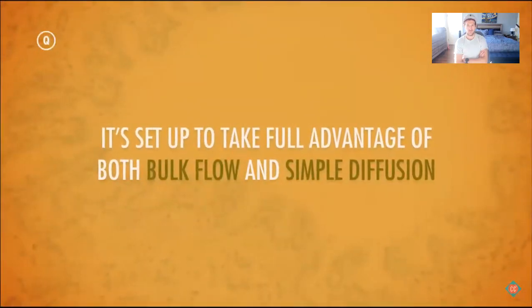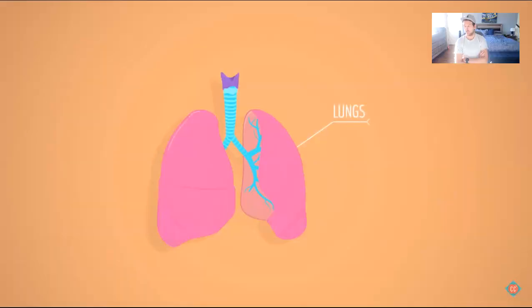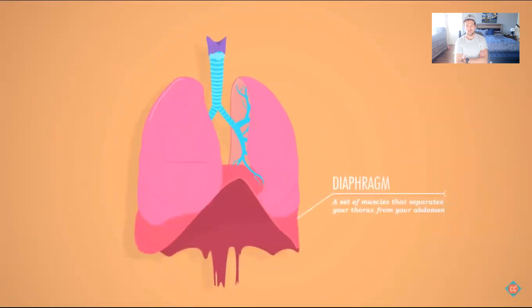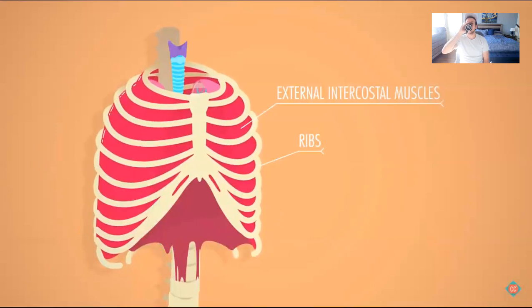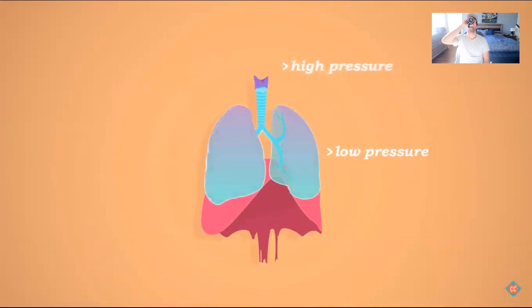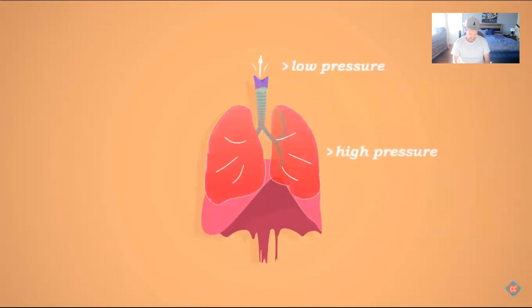Once those oxygen molecules filter down into the cells in your lungs, they're suddenly very close to the blood they're trying to reach — they only have to diffuse across four layers of cell membranes to get from the lung cell into the blood. That's why your respiratory system is set up to take full advantage of both bulk flow and simple diffusion. The bulk flow part is handled by your lungs, which operate like a pump or bellows. They don't have contractible muscle tissue, so they require outside help — enter the diaphragm, a big thin set of muscles separating your thorax from your abdomen. When your diaphragm contracts, it pulls itself flat and your external intercostal muscles lift the ribs up and out, causing the chest cavity to expand. This makes pressure inside your lungs lower than outside, and air rushes in. Then the diaphragm relaxes, the weight of the ribs settles in, pressure inside becomes higher, and the air rushes out. That is breathing 101.